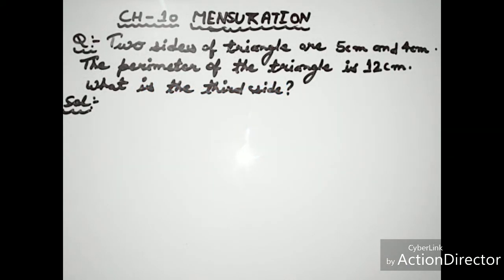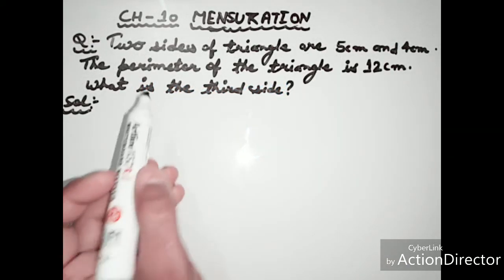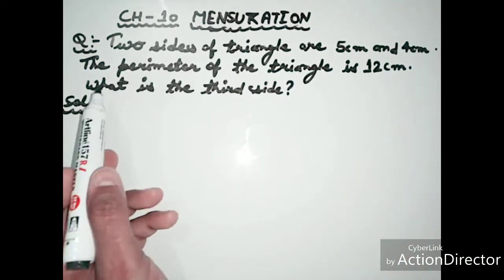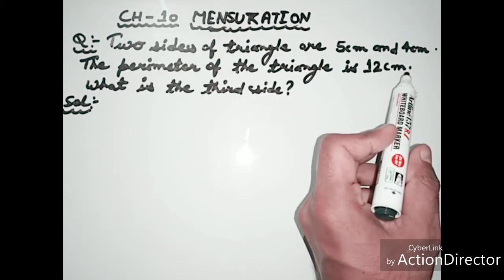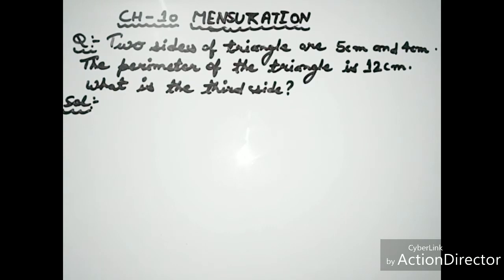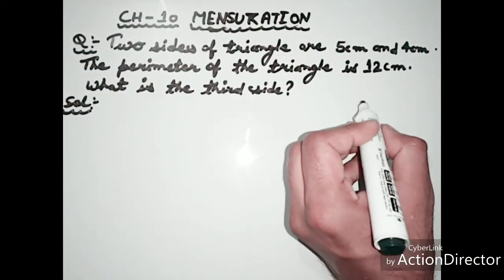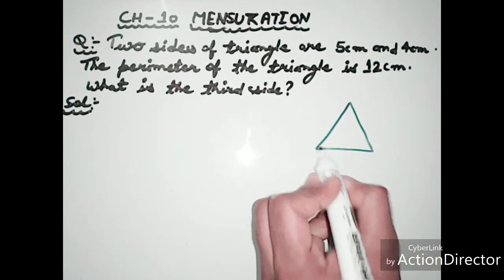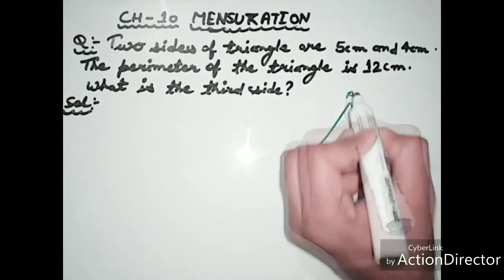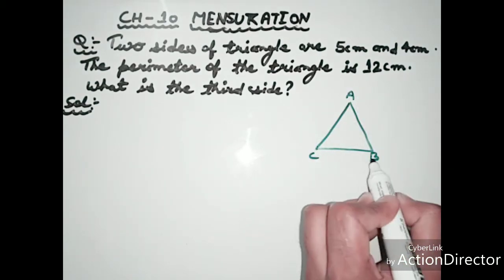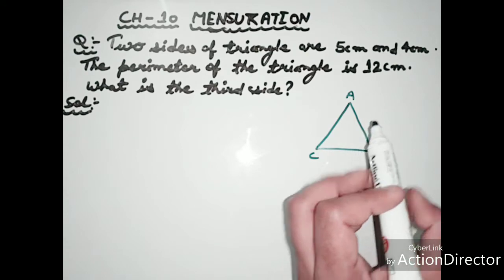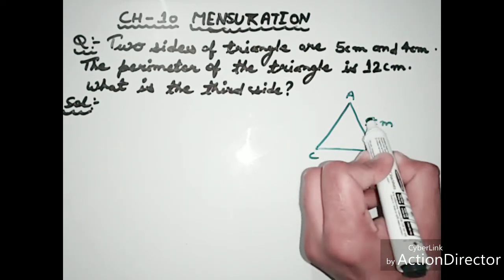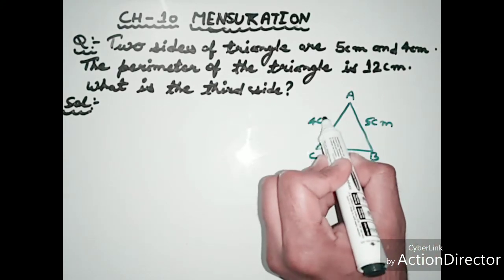The next example: Two sides of a triangle are 5 centimeters and 4 centimeters. The perimeter of the triangle is 12 centimeters. What is the third side? We draw triangle ABC, where AB equals 5 centimeters and AC equals 4 centimeters.